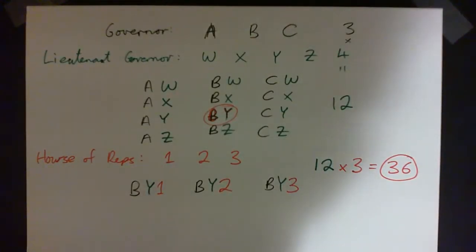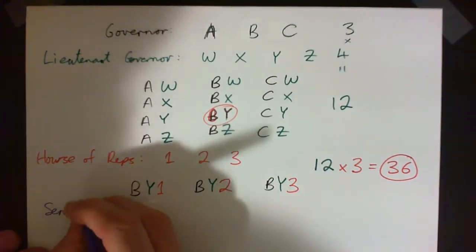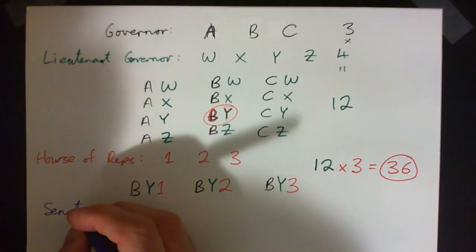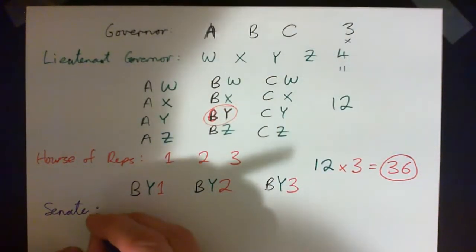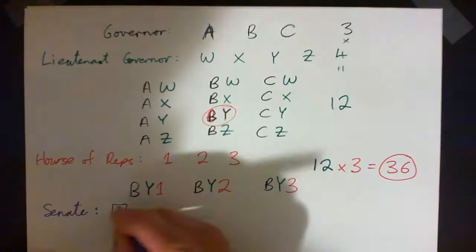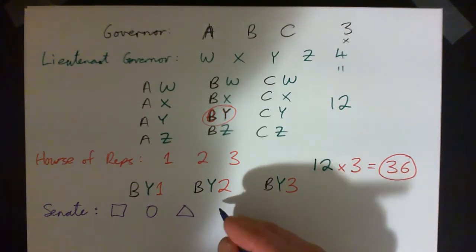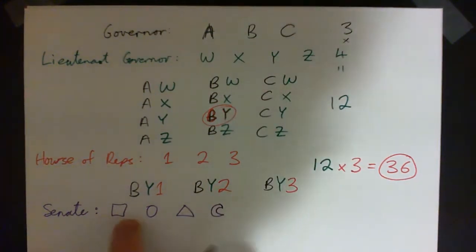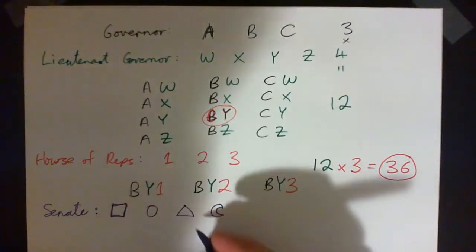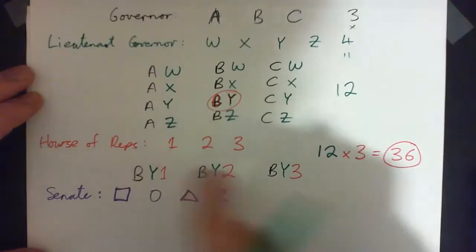So the next one is Senate. How many possibilities there? Four candidates for Senate. So for Senate, you could vote for the triangle, the square, the circle, or the moon. So that's four possibilities for the Senate. Square, circle, triangle, or moon. Okay, so we could take any combination of governor and lieutenant or House of Reps, of which are 36.